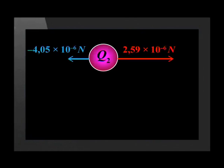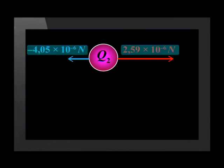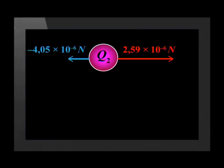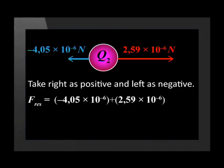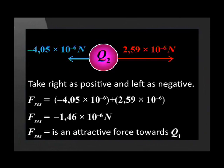Let us now draw a sketch diagram to show the forces on Q2 as a result of Q1 and Q3. The forces act in opposite directions, so allocate one direction as positive and the other as negative. We take right as positive and left as negative. Using this formula to calculate the resultant force, we find that the resultant force on Q2 is negative 1.46 times 10 to the minus 6 Newtons, meaning the resultant force on Q2 is attractive towards Q1.